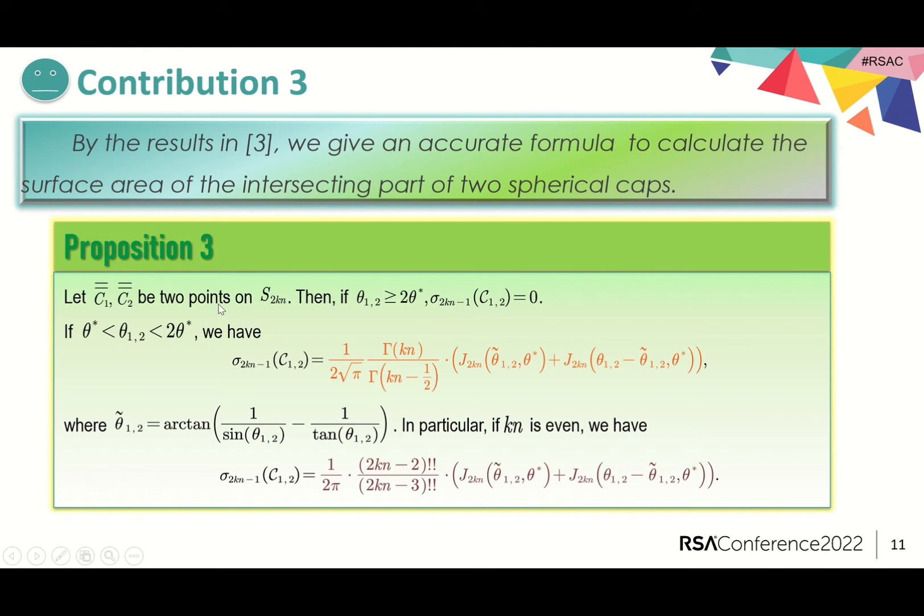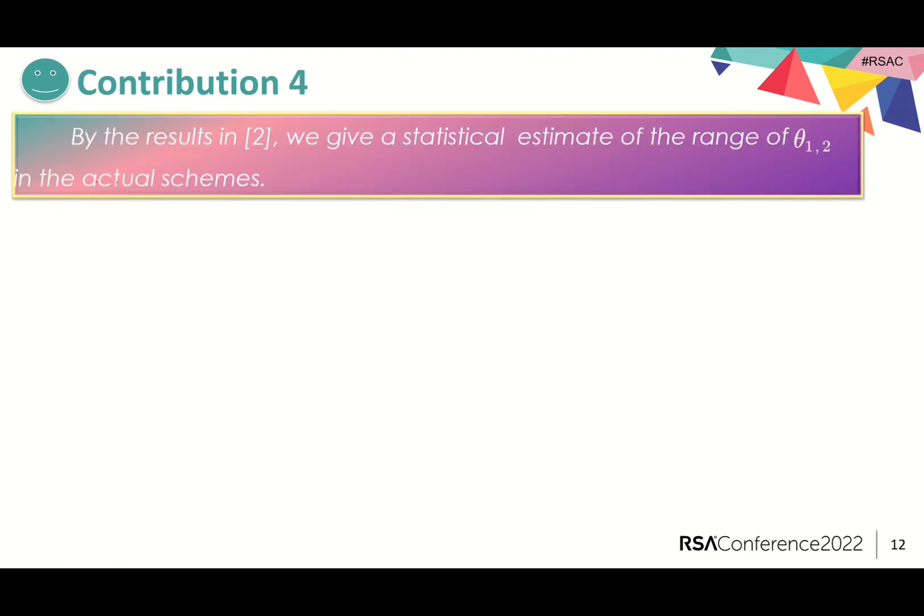From this proposition, we get an efficient way of calculating the total proportion of the key candidates inside two intersecting caps by this relationship. Because of the tedium of calculating the angles between each pair of queries one by one, an estimation of the range of theta_{1,2} in the actual schemes is needed.